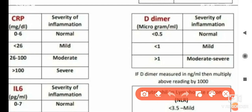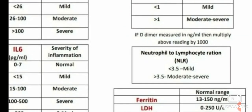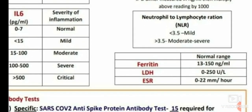For D-dimer criteria in COVID-19 infection: if D-dimer is less than 0.5 micrograms per mL, that is normal. If less than 1, it is mild. If more than 1, it is moderate or severe. If D-dimer is measured in nanograms per mL, then above 1000 is significant.